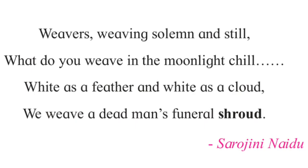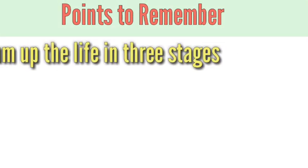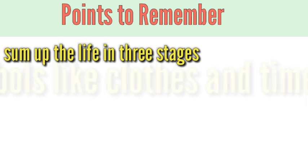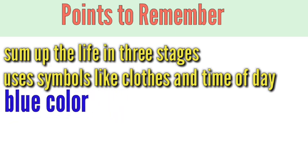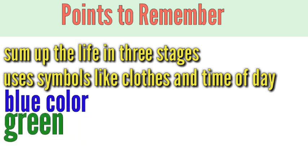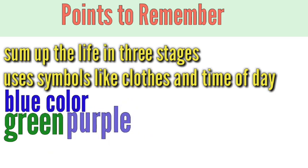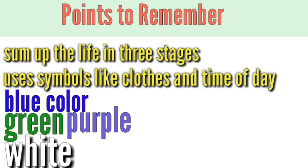Points to remember: Sarojini Naidu sums up the life of human beings in three main stages using symbols of clothes and times of day. Life begins with blue — joy and happiness. It continues with the addition of green and purple, meaning sorrow also enters life along with happiness, and life is more active in this stage. In the final stage, all colors vanish and only white remains.